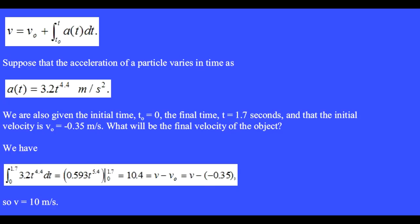Suppose that the acceleration of a particle varies in time as a(t) equals 3.2t to the 4.4, measured in meters per second squared. We are also given the initial time t zero equals zero, the final time t equals 1.7 seconds, and the initial velocity is v zero equals minus 0.35 meters per second. What will be the final velocity of the object? We integrate a(t) across the time interval, which gives the number 10.4, so we get a final velocity of 10 meters per second.